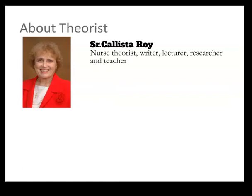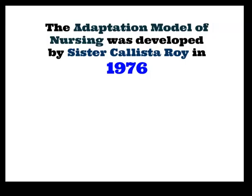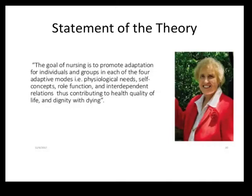We are going to see about the theorist Sister Callista Roy. She was a nurse theorist, writer, lecturer, researcher and teacher. She was a professor and nurse theorist at the Boston College of Nursing in Chestnut Hill, born in Los Angeles on October 14th, 1939. She got her master's degree in pediatric nursing from the University of California Los Angeles in 1966, and master's and PhD in sociology in 1973 and 1977. The adaptation model of nursing was developed by Sister Callista Roy in 1976.